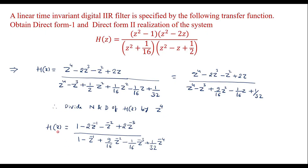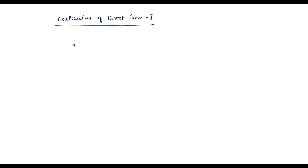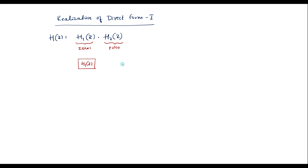In an IIR filter, the numerator corresponds to zeros and the denominator corresponds to poles. For direct form 1 realization, I will divide H(Z) into two sub-blocks: H1(Z) corresponding to zeros (the numerator) and H2(Z) corresponding to poles (1 over the denominator). Let X(Z) be the input, W(Z) the intermediate output, and Y(Z) the output.